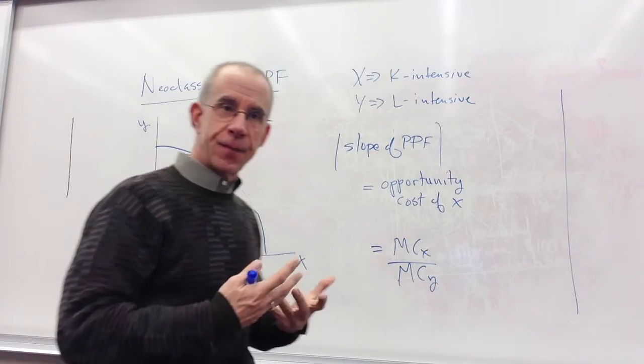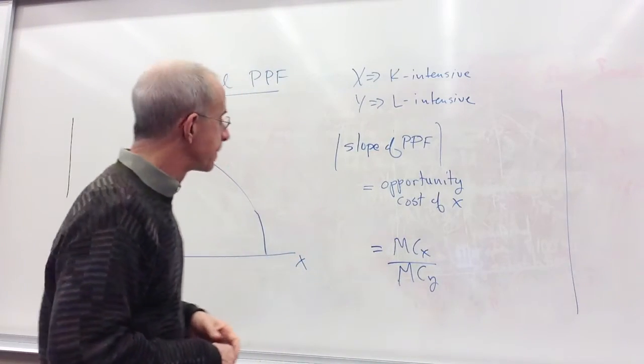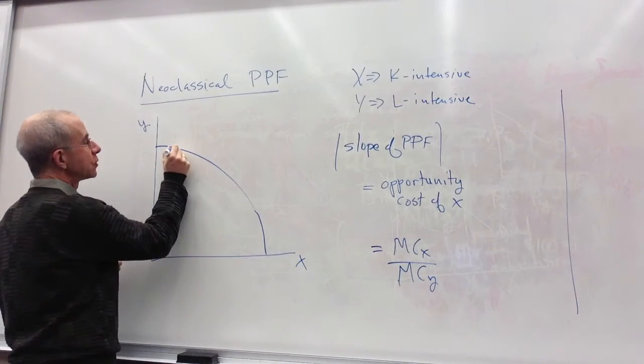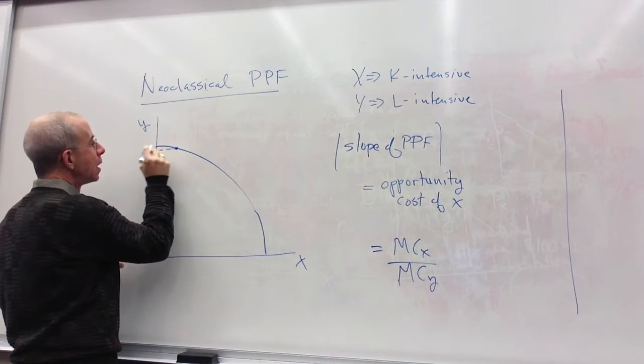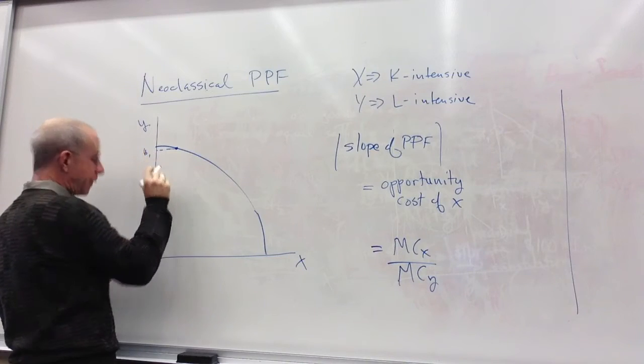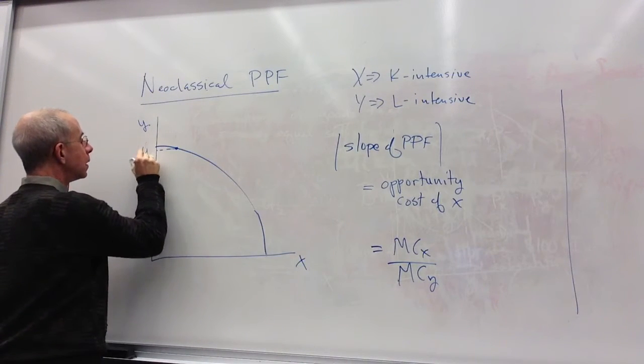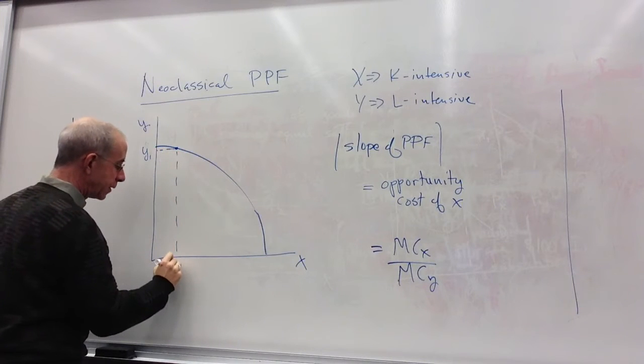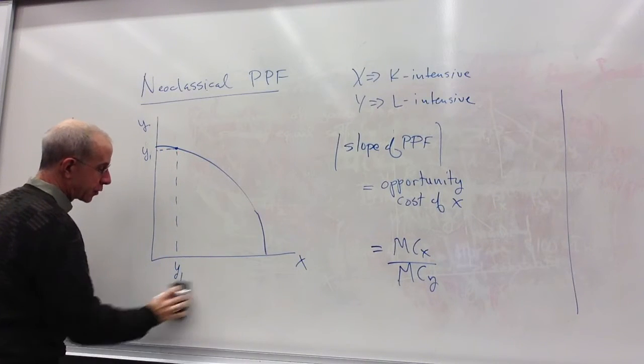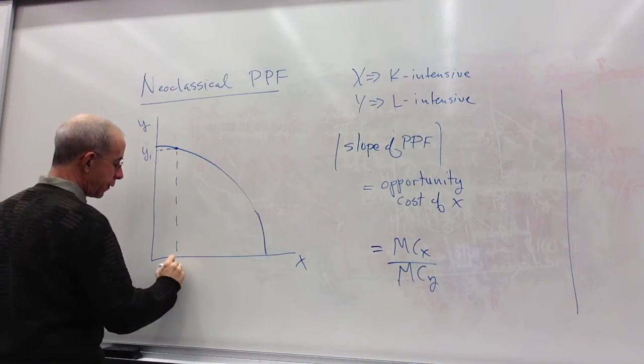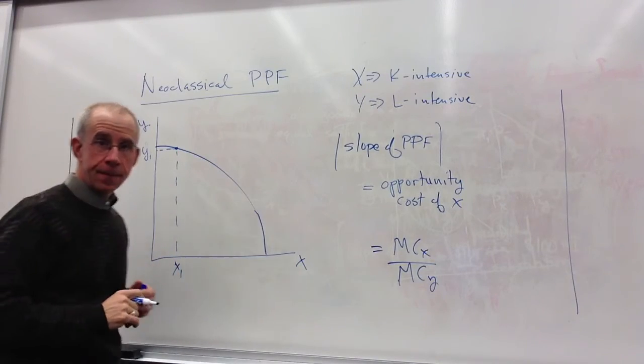So let's think about the economics of this. Let's imagine that you're starting out really with a very high level of production of Y and a relatively low production of good X.